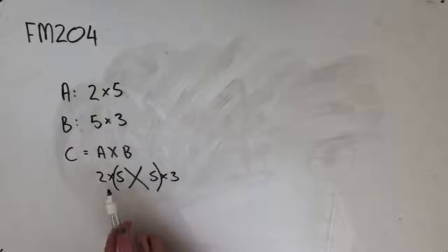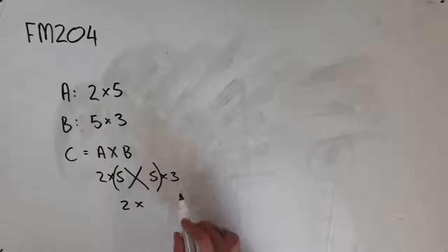This shows that it's defined, and then what we're left with on the outside, so the number of rows from matrix A and the number of columns from matrix B leaves us with the matrix product order.